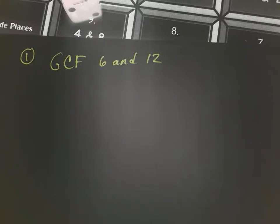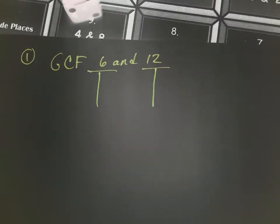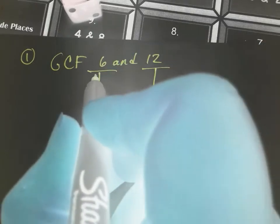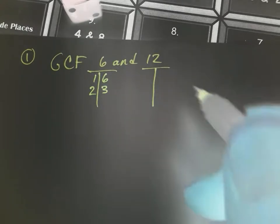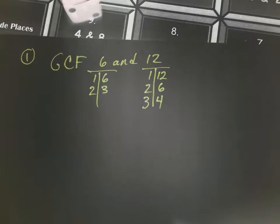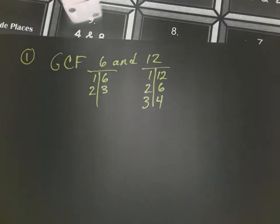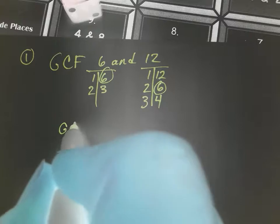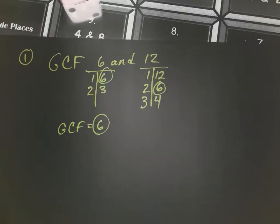Let's zoom in and work on the GCF of six and twelve. We could use T-charts: a T-chart for six and a T-chart for twelve. Six equals one times six or two times three — it only has four factors. Twelve equals one times twelve, two times six, and three times four. Looking for common factors, they both share ones, twos, threes, and sixes. The greatest of those is six, so the GCF is six.